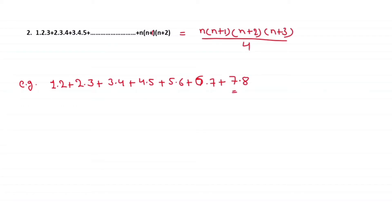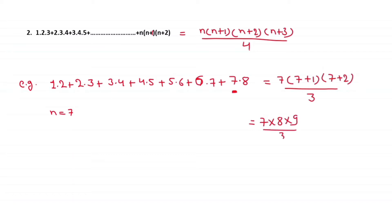For example, here n is 7. Using the formula, the sum equals 7×(7+1)×(7+2)/3, which equals 7×8×9 divided by 3, which equals 56×3, equal to 168. This is our answer.